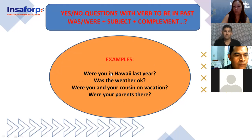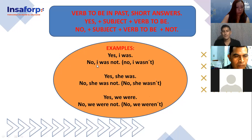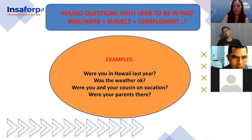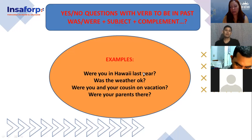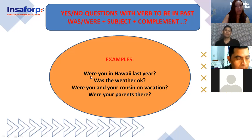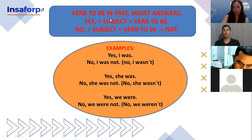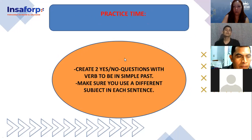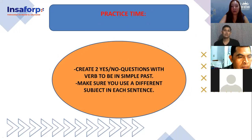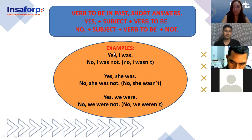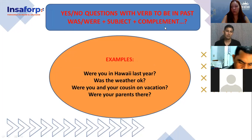So for 'Were you in Hawaii last year?' — yes, I was. Or no, I was not. No, I wasn't. If you want the long version: 'Yes, I was in Hawaii last year.' Or 'No, I wasn't in Hawaii last year.' Practice time — you have to create two yes or no questions with verb to be in past. Use the structure we just saw: was/were + subject + complement. Make sure you use a different subject in each sentence.